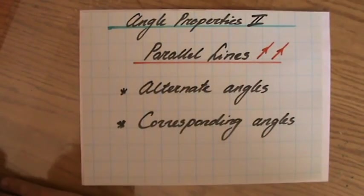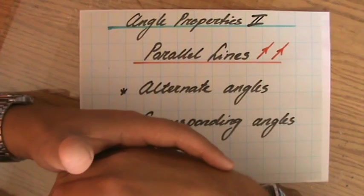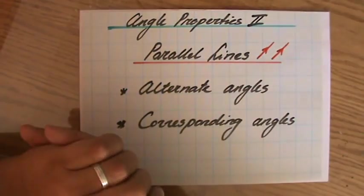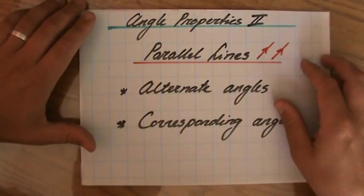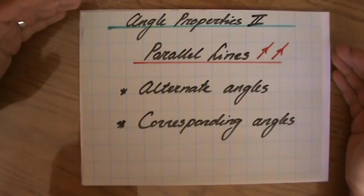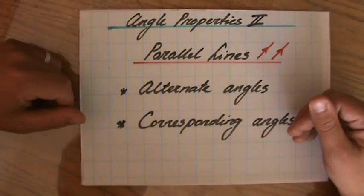Still talking about angle properties. We've spoken about degrees in a full turn, degrees on straight lines, vertically opposite angles, and now it's time to look at parallel lines and some angle properties there.